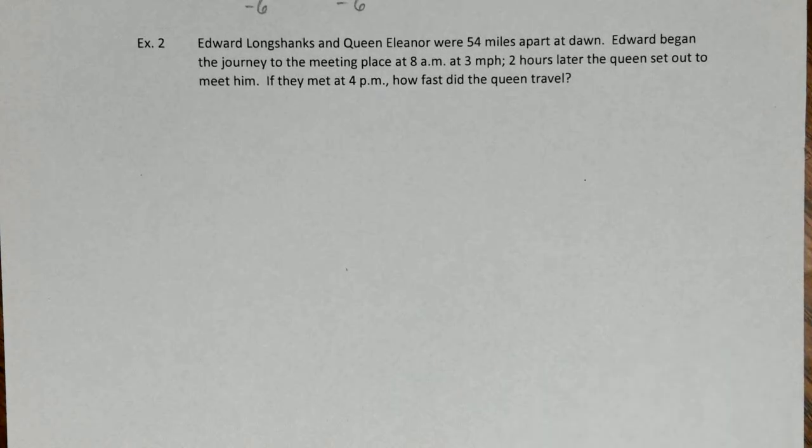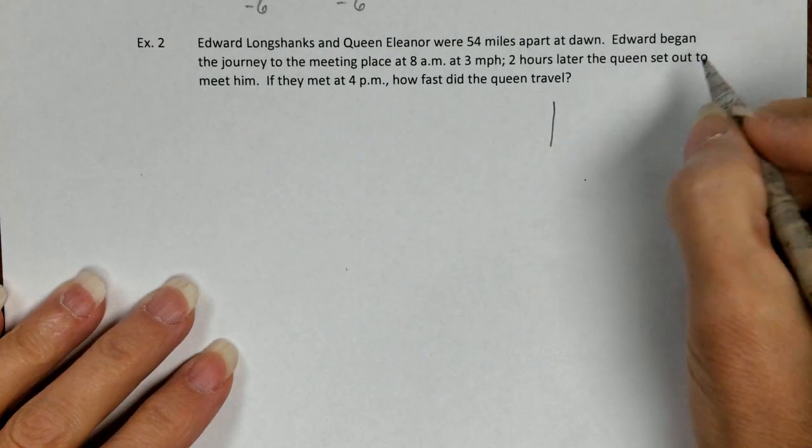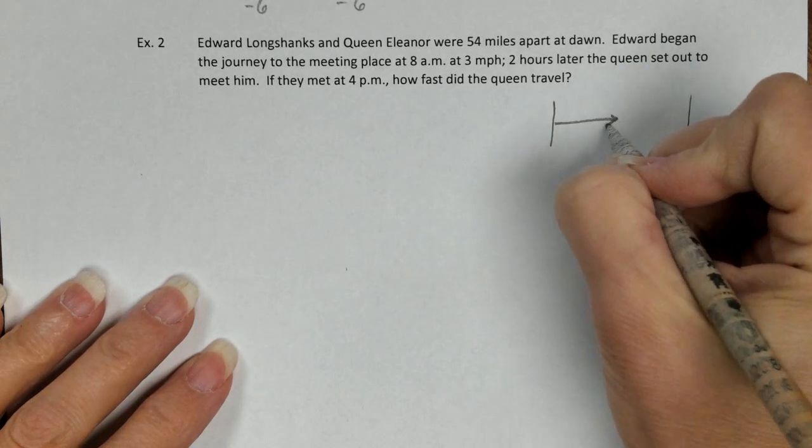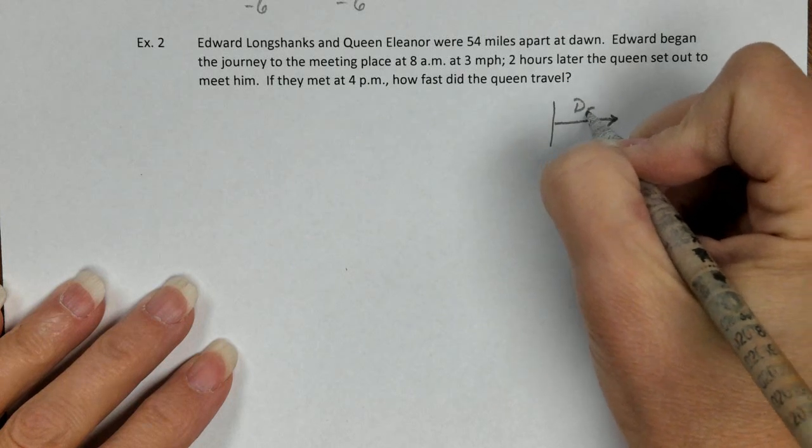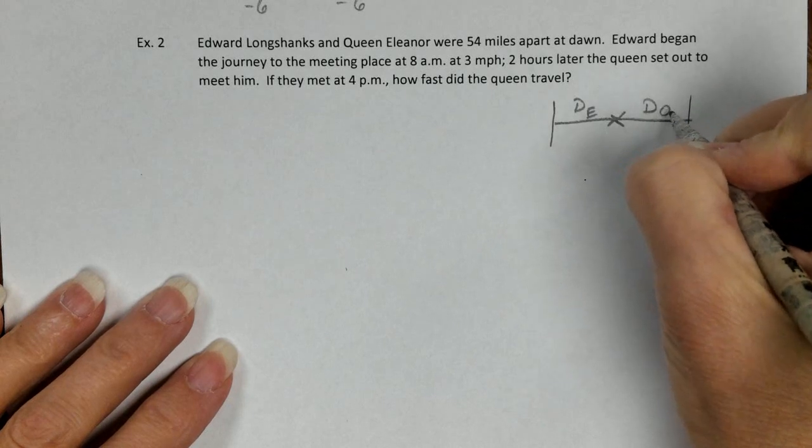So for Example 2, Edward Longshanks and Queen Eleanor were 54 miles apart at dawn. Edward began the journey to the meeting place at 8 AM at 3 MPH. Two hours later the Queen set out to meet him. They were going to meet in the middle. So they were 54 miles apart. Edward's here, the Queen's here.